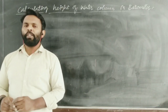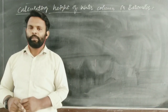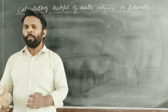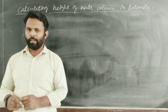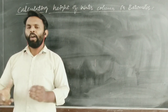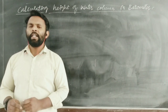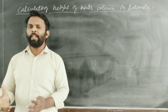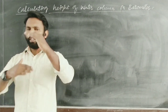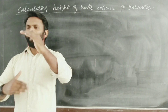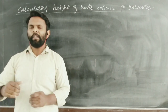A barometer is used to measure atmospheric pressure at a place. A simple barometer consists of mercury in it. The normal atmospheric pressure at sea level is 76 cm, so the mercury column in a barometer is 76 cm.